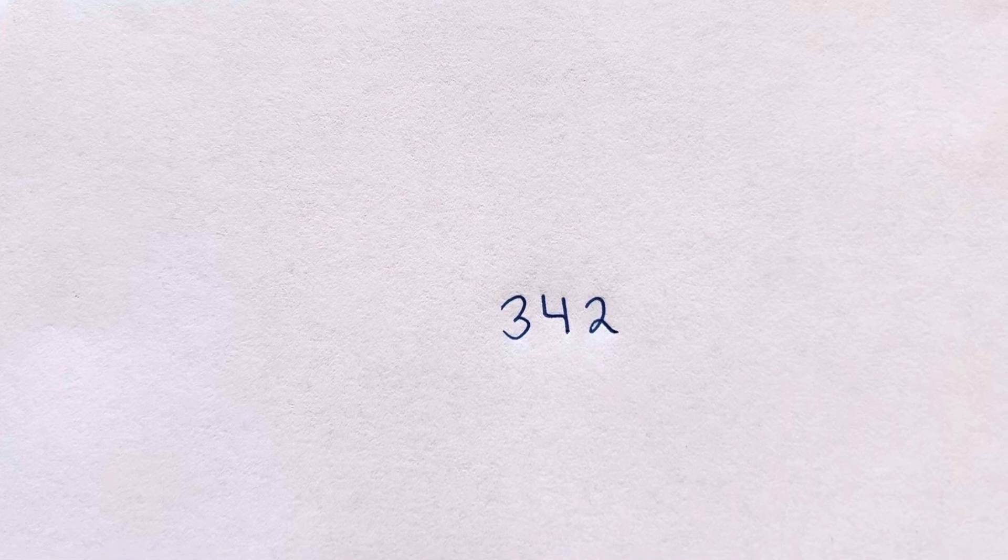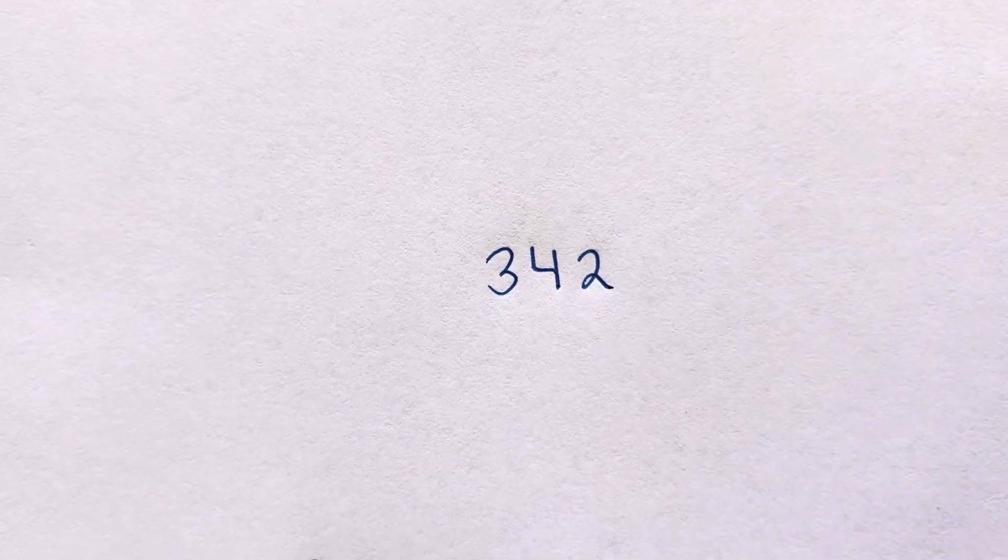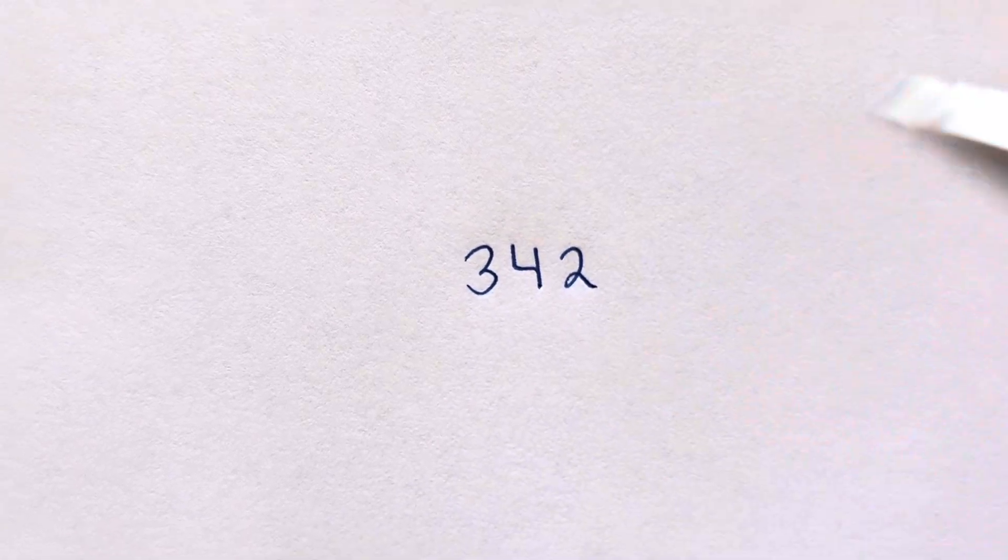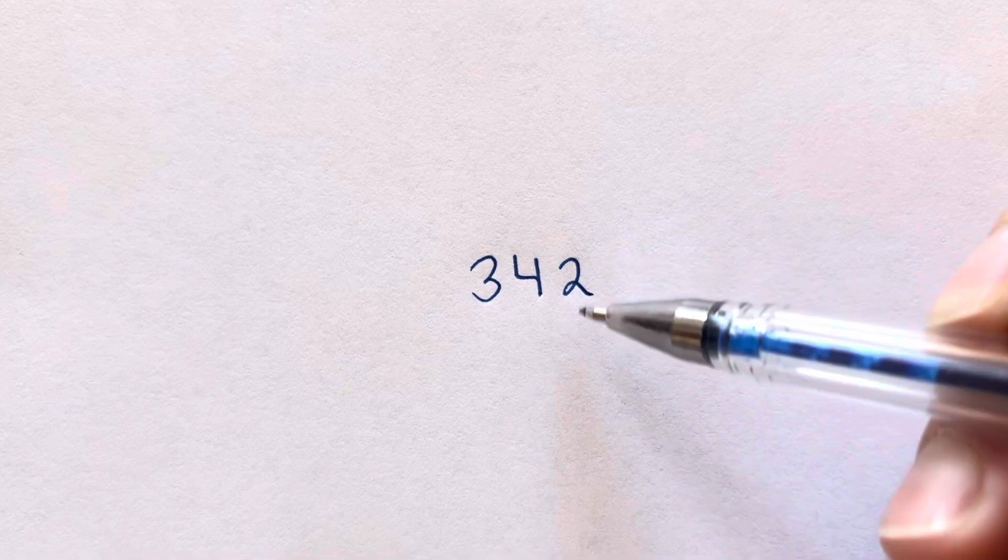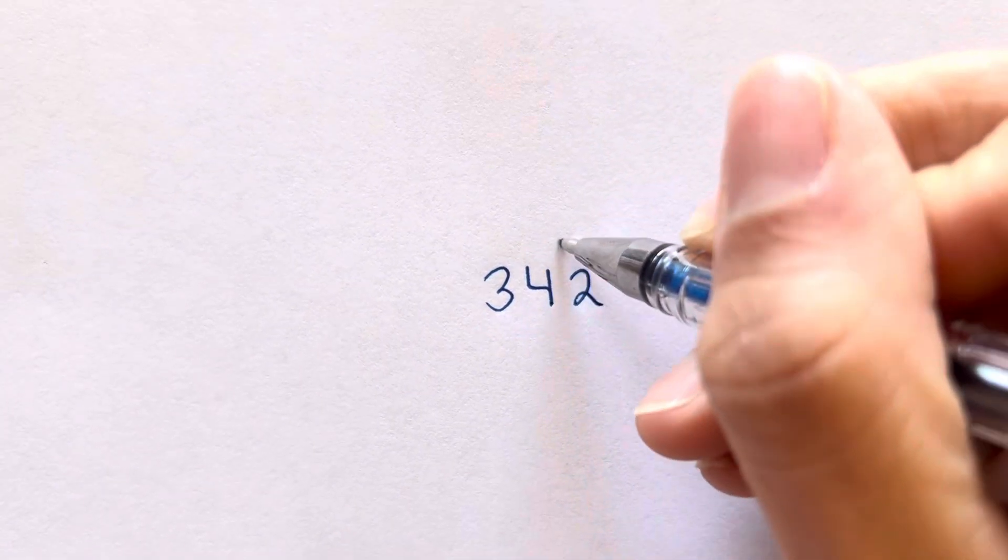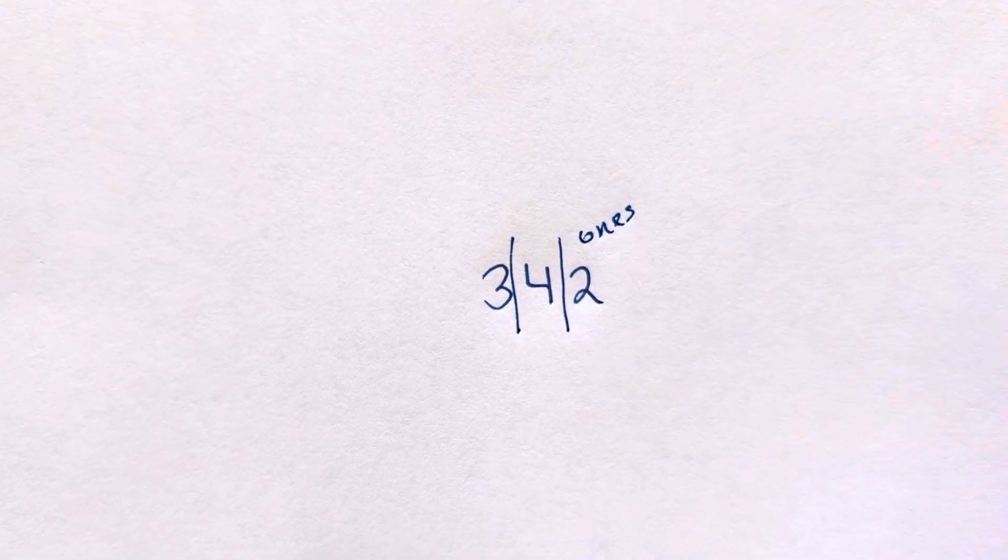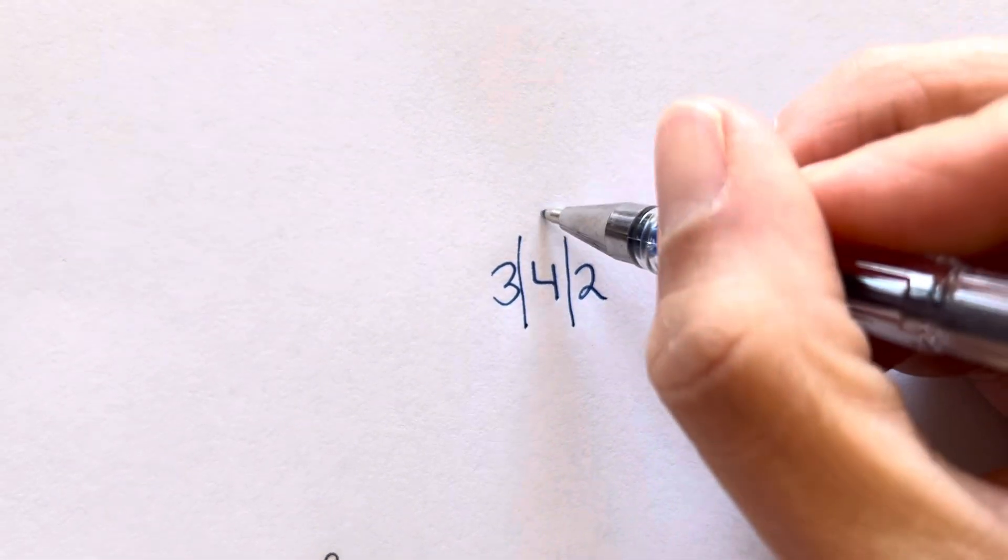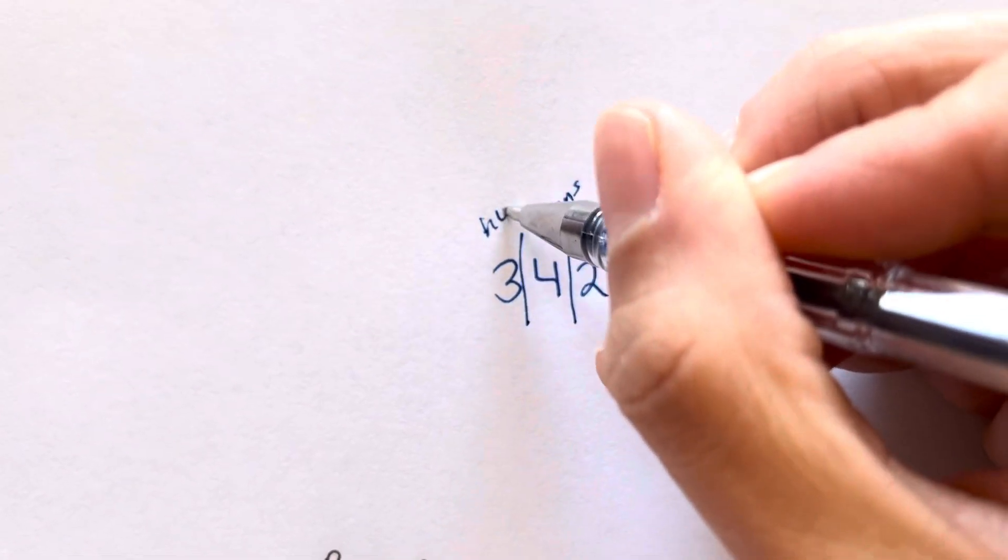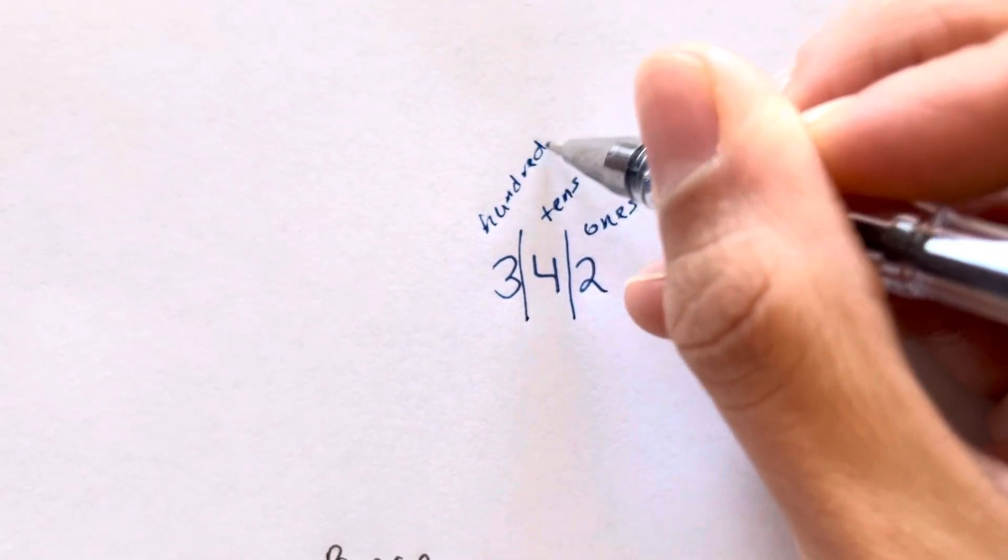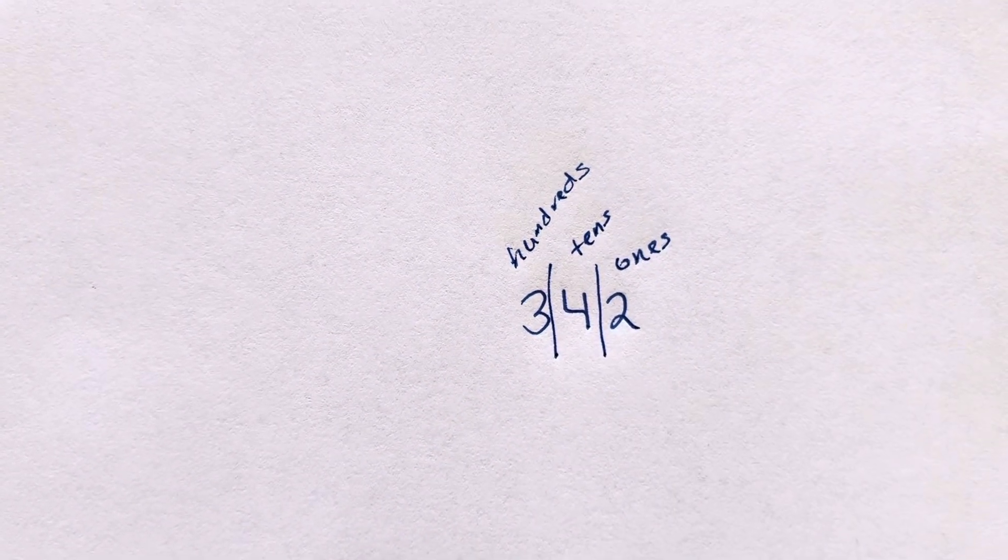So let's start with the number 342. If I said what is the place value, what column, what place is the two in? You could kind of divide this out and you would tell me that the two is part of the ones column, the four is part of the tens column, and the three is part of the hundreds.